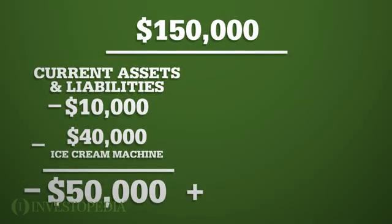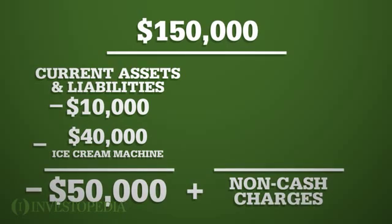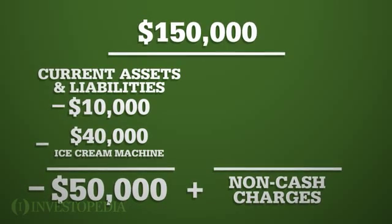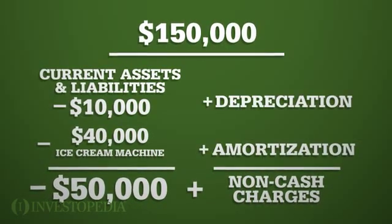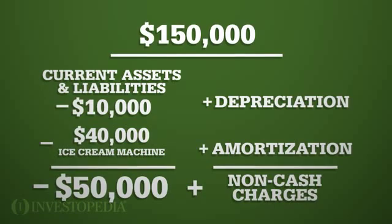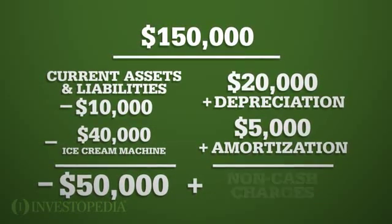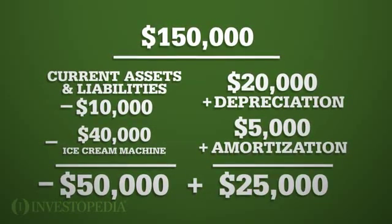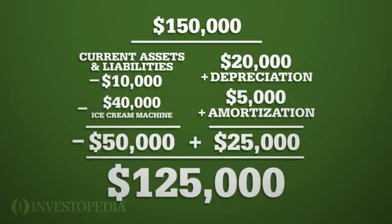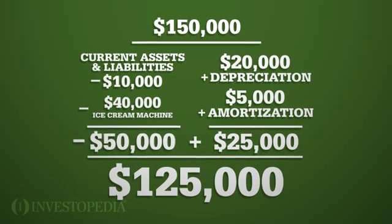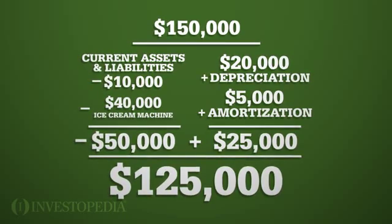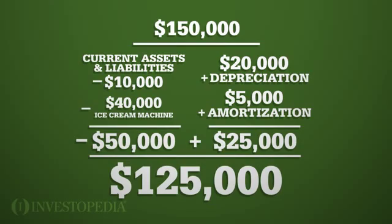Finally, Al will add back any non-cash charges that reduced his net income, such as depreciation or amortization — plus $20,000, plus $5,000. This brings Al's free cash flow to $125,000: $150,000 minus $50,000 in working capital and capital expenditure outlays, plus $25,000 in depreciation and amortization.